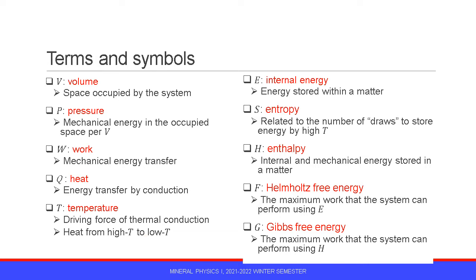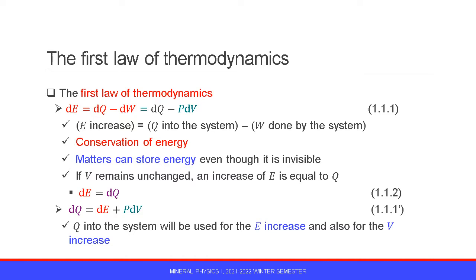Heat is transferred from high temperature to low temperature. E is internal energy. Matter can store energy within it, even though it is invisible. S is entropy, which is related to the number of ways to store energy by temperature. H is enthalpy, which is internal energy and mechanical energy stored in a matter. F is Helmholtz free energy, which represents the maximum work that the system can perform using internal energy E. G is Gibbs free energy, which is the maximum work that the system can perform using enthalpy.